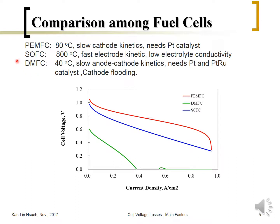For the Direct Methanol Fuel Cell (DMFC), which operates at lower temperature, not only is the cathode oxygen reduction kinetics slow, but methanol oxidation at the anode is also slow, resulting in very significant activation overpotential. Additionally, methanol may cross over to the cathode, causing the open circuit voltage to drop — from a theoretical 1.2 V it may drop to around 0.6 V. CO poisoning is also an issue, so platinum and platinum-ruthenium are needed as catalysts. Because it operates at low temperature, the water evaporation rate is slow, and generated water mostly remains in liquid form, causing cathode flooding and mass transfer limiting at higher current density.